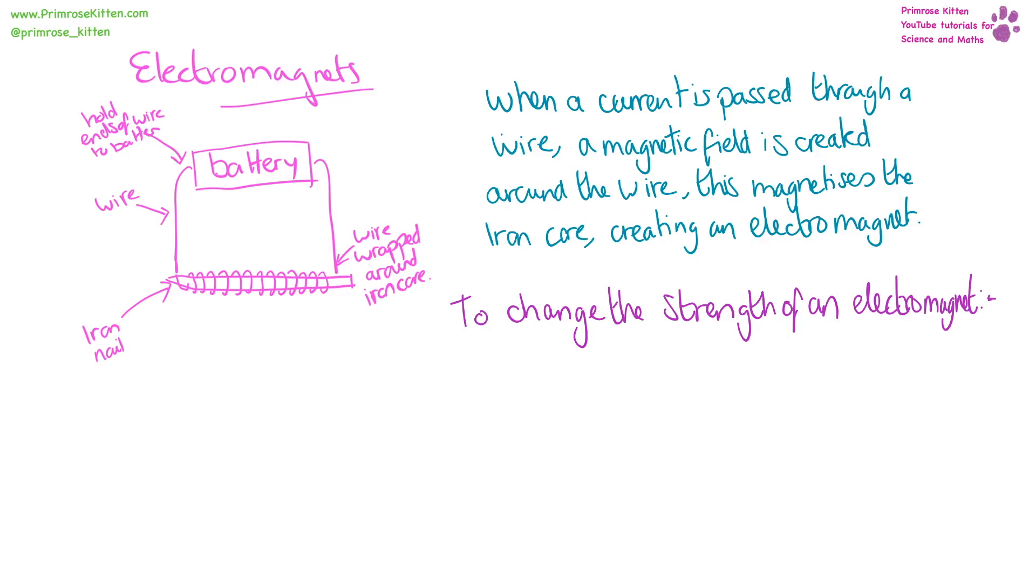If you want to change the strength of an electromagnet, you can do two things. You can change the current, or you can change the number of turns, or the number of coils that the wire is wrapped around the iron core.